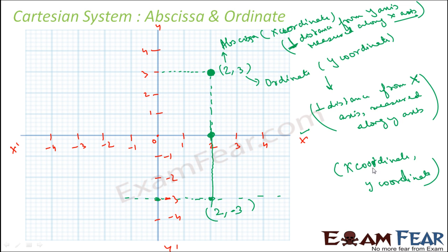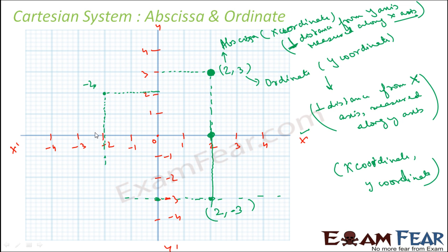Let's take one more example. For the x-coordinate, draw a line parallel to the y-axis — the distance from the y-axis measured along the x-axis is minus two. Then for the ordinate, draw a line parallel to the y-axis and measure the distance from the x-axis — that is two units in the positive side. So this point is minus two comma two.